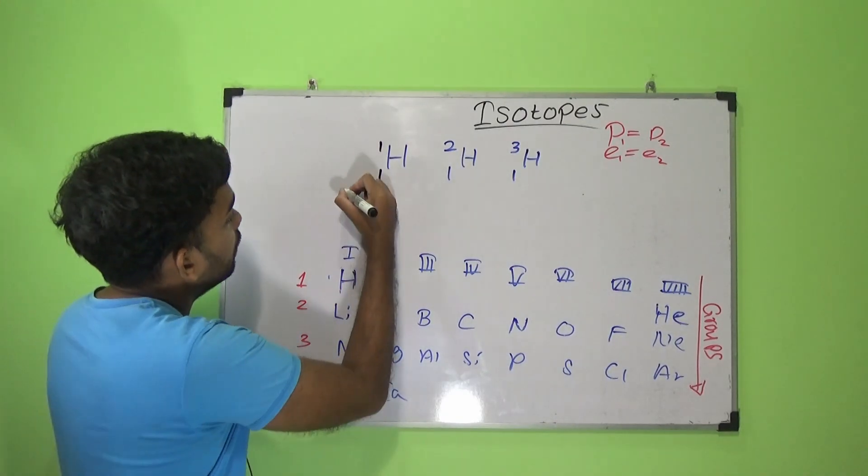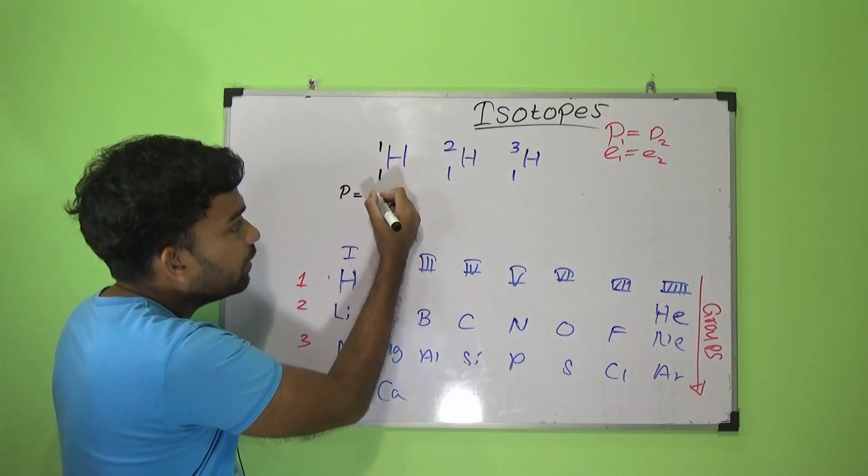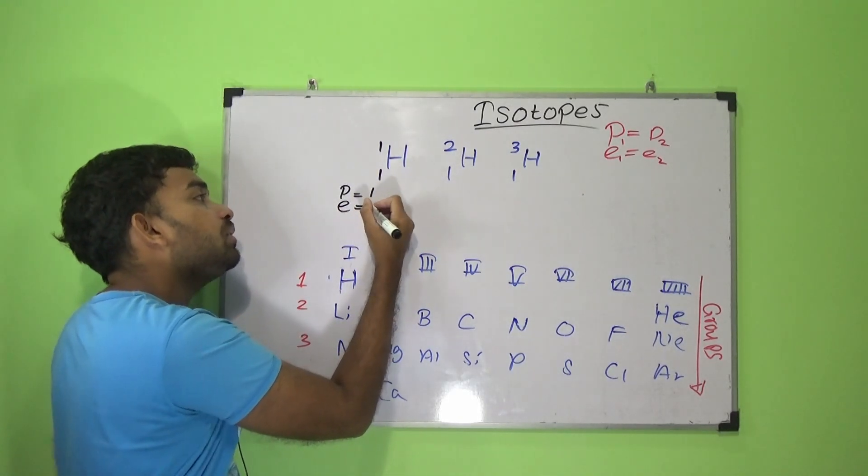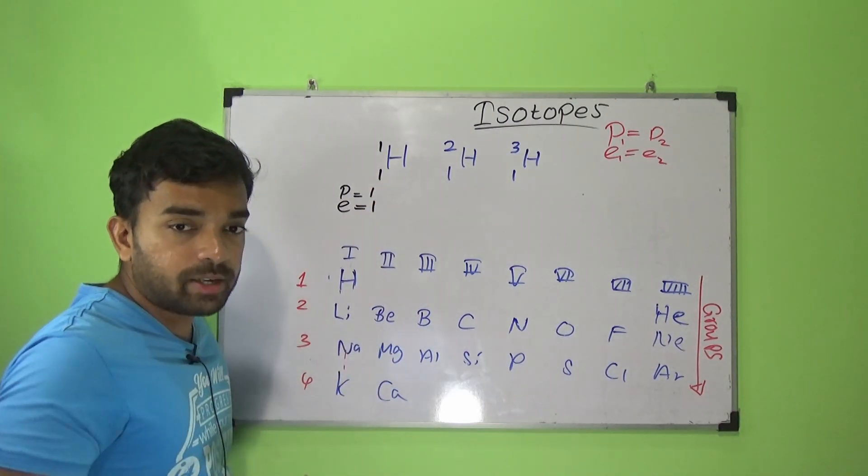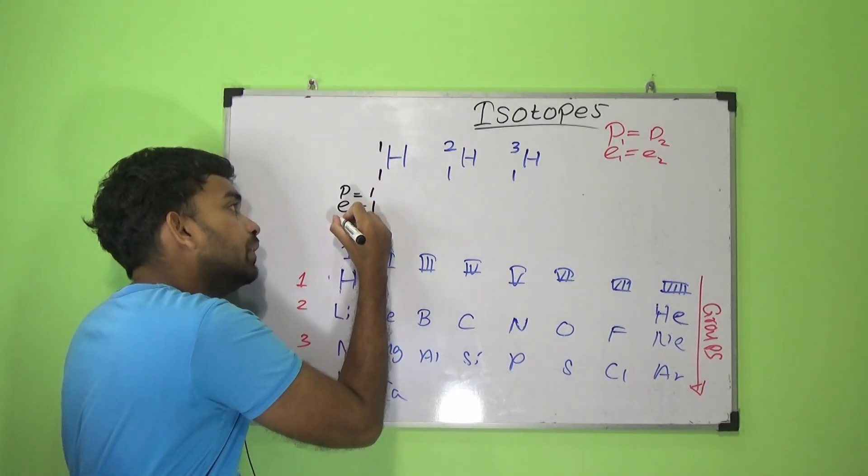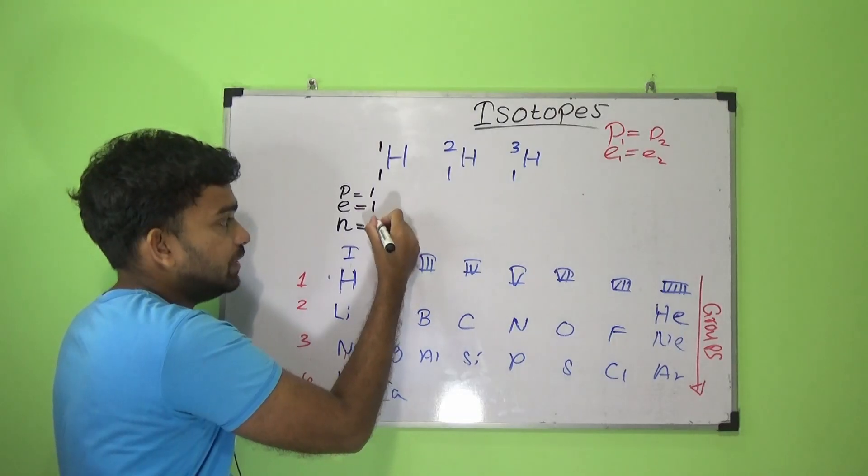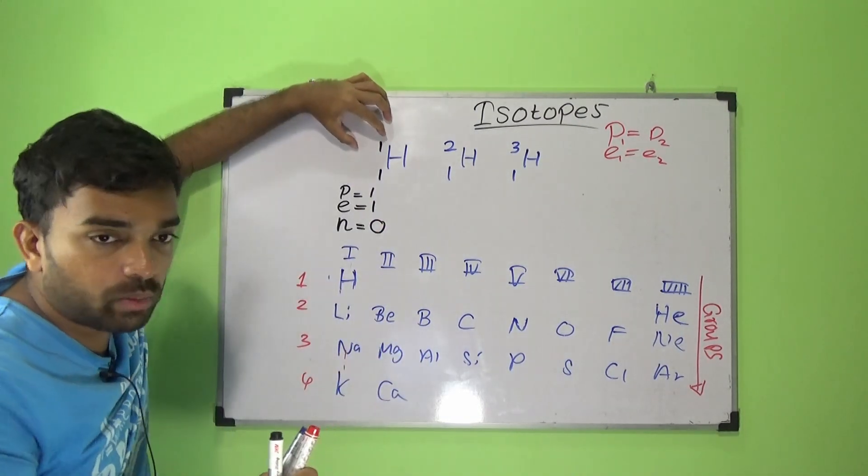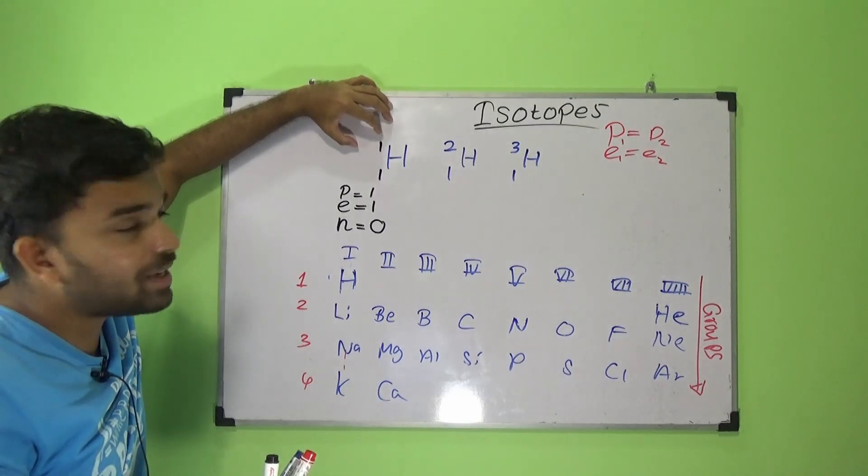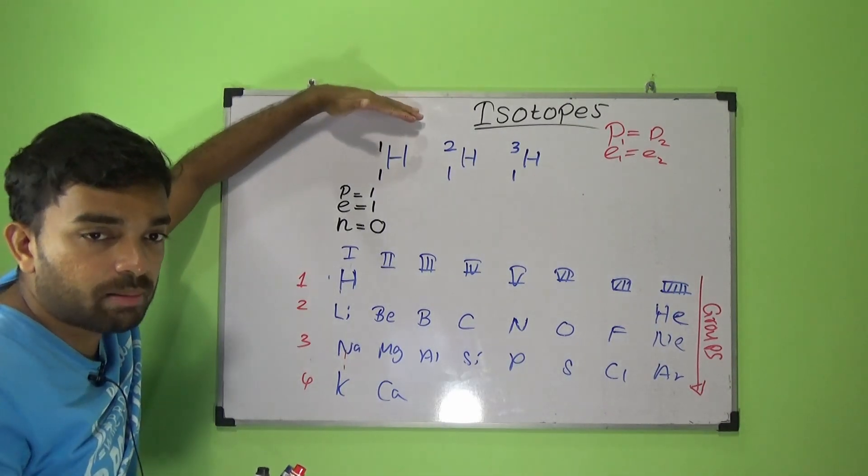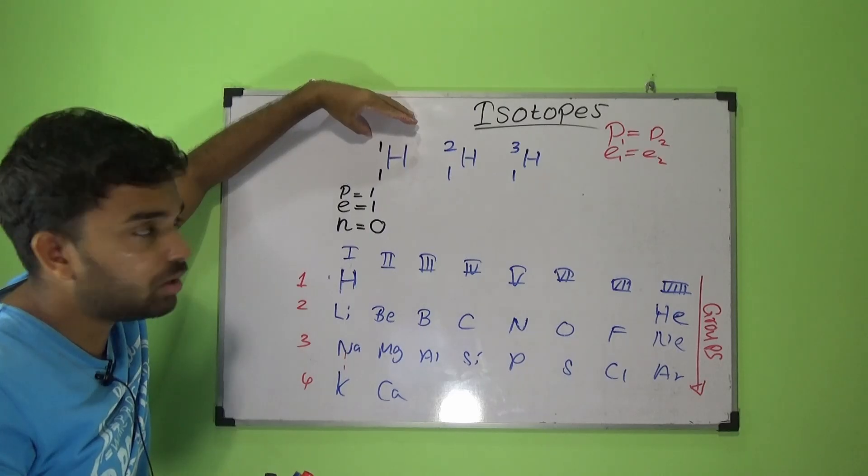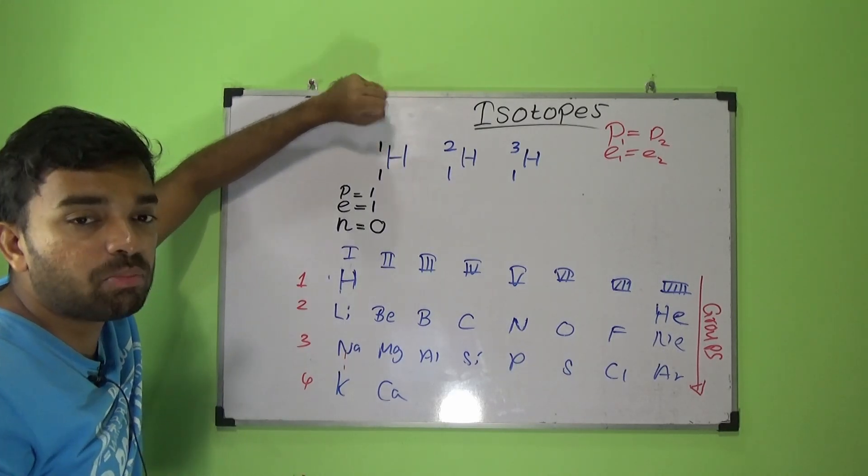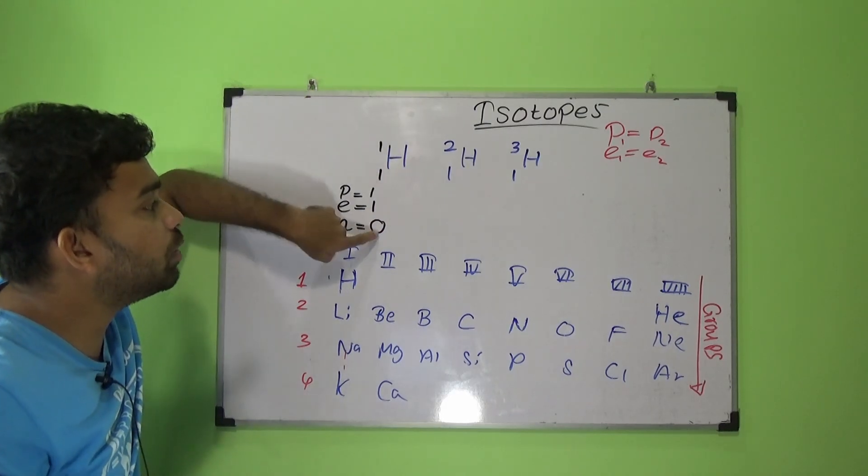When it comes to this, the number of protons is 1, number of electrons is 1, but number of neutrons is different. Because this value is equal to number of protons plus number of neutrons.